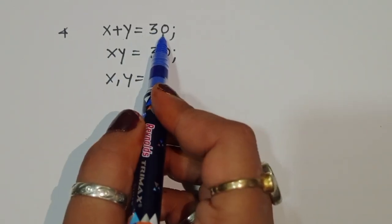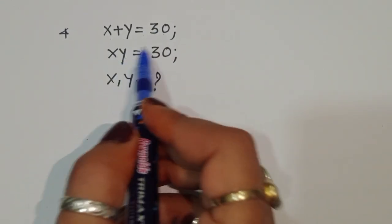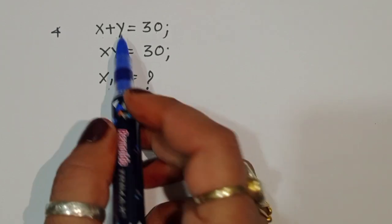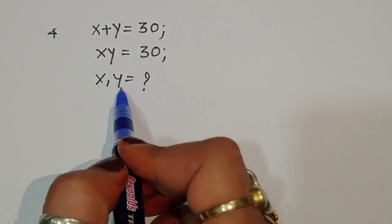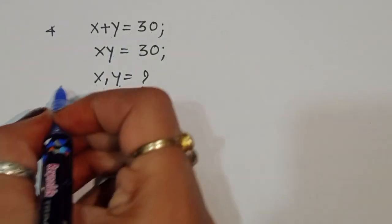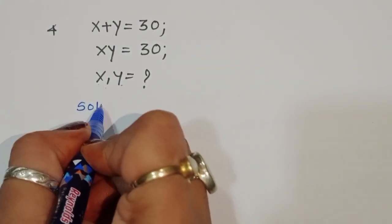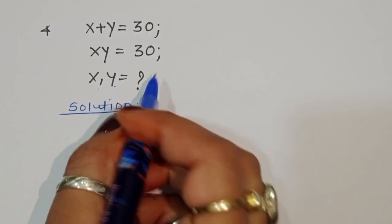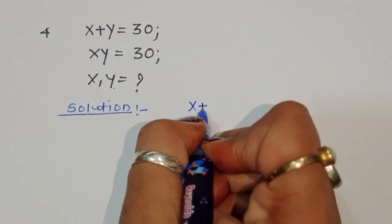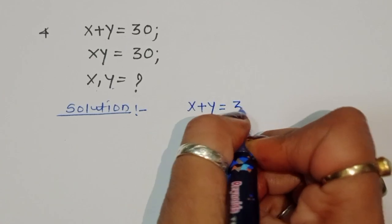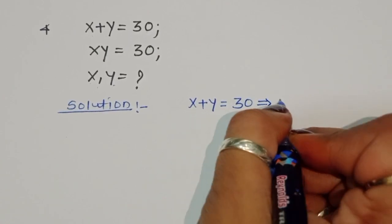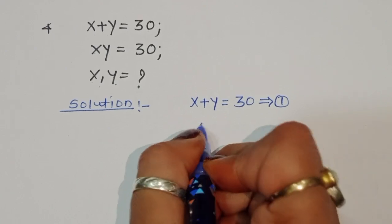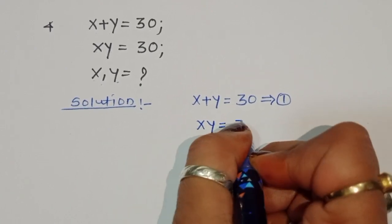We are given x plus y is equal to 30, and xy is equal to 30. We have to find out the value of x and y. The first equation is x plus y equals 30, and the second equation is xy equals 30.